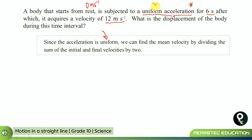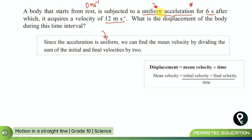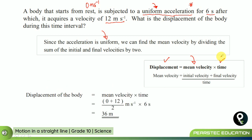Since the acceleration is uniform, we can find the mean velocity by dividing the sum of the initial and final velocity by two. So displacement equals zero plus 12, divided by two, multiplied by six seconds. The answer is 36 meters. That's very simple and easy. Why do we divide by two? That's because it is uniform acceleration — remember that one.